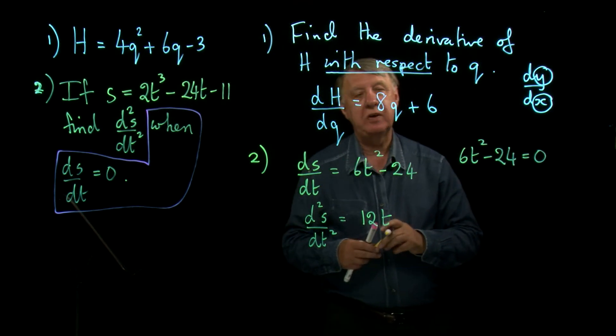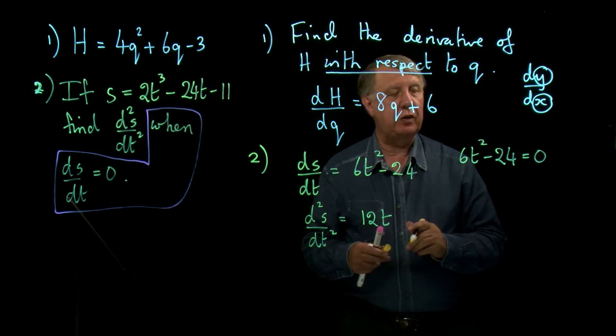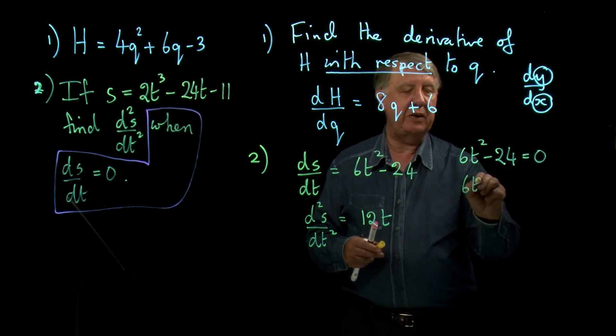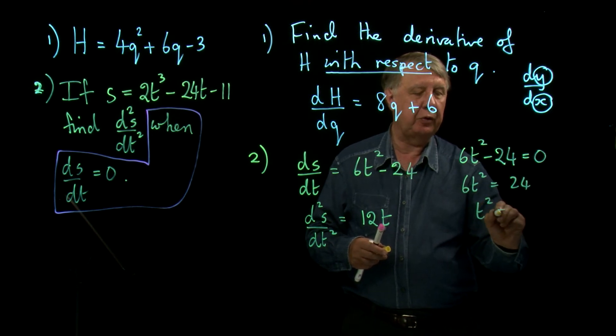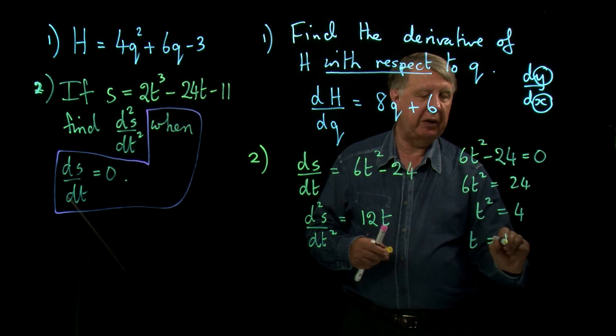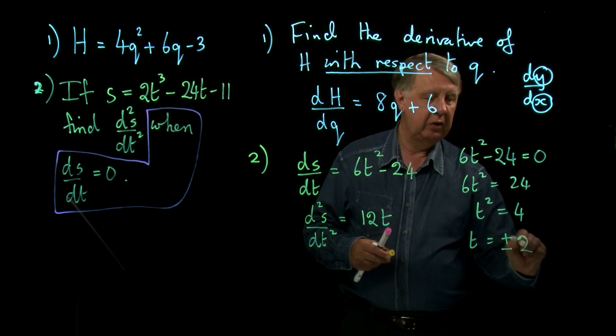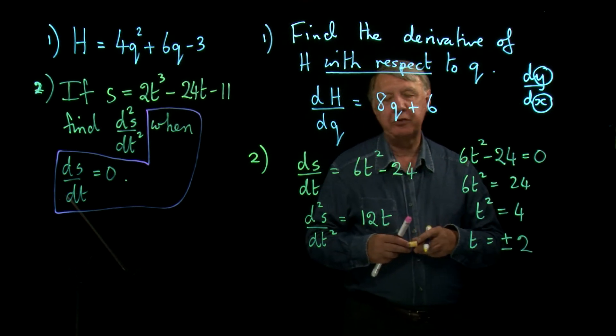That's a little equation in t, so let's solve it. 6t² = 24, divide by 6, t² = 4, t is plus or minus 2. Don't forget the plus or minus.